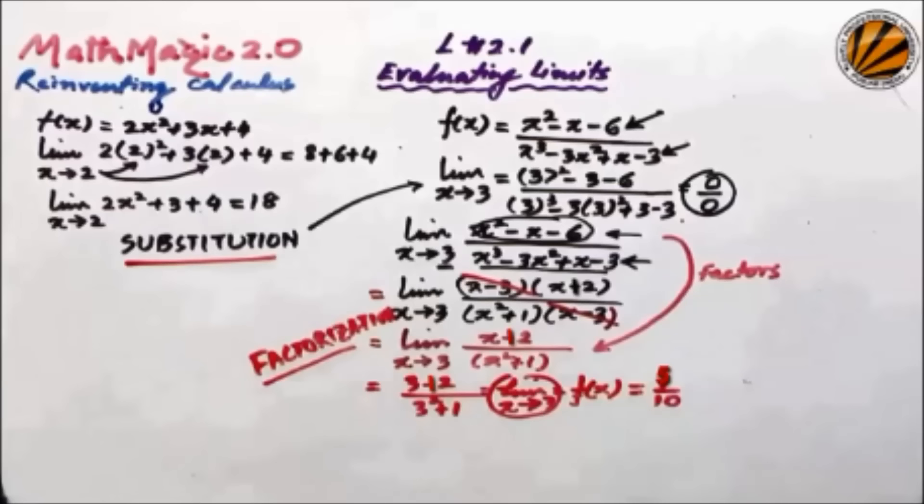In the previous lecture we looked at how limits are assessed. You can directly substitute the value into a function to assess the limit, but if that doesn't work you can do factorization, and if these two things do not work you can always go for rationalization and find the limits. Welcome to lecture 2.2. We've already seen the various methods of calculating limits: substitution, factorization, or rationalization.